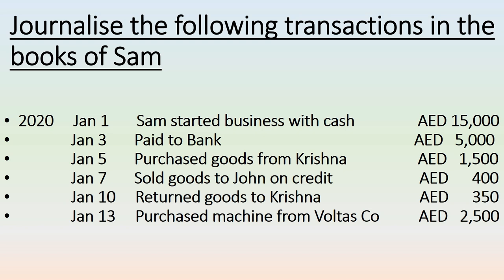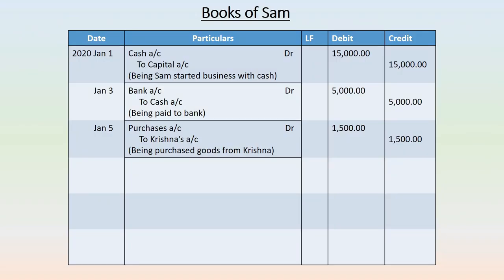Next transaction: purchased goods from Krishna, 1,500 dirhams. Keep in mind that if goods are purchased, you should use the purchases account. If purchasing any other item than goods, use that item's account, not purchases account. The two accounts are purchases account and Krishna's account. Since the supplier name is mentioned, we can realize it is a credit purchase. Purchases account can use either nominal account rules or real account rules, because purchases falls under both. As a nominal account, purchases is an expense and to be debited; as a real account, inventory comes into the business and is to be debited.